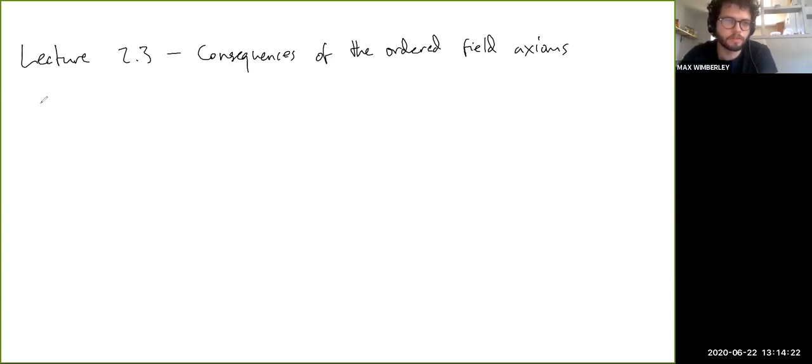Okay, so in the last video I introduced the ordered field axioms. So there's the field axioms, the ordering axioms, and then the special axioms that combine them all together. You can refer to all of those things as the ordered field axioms, right?